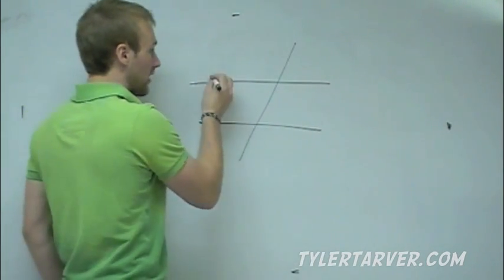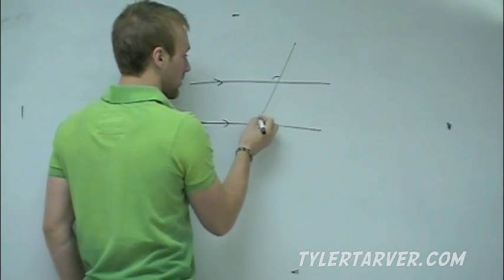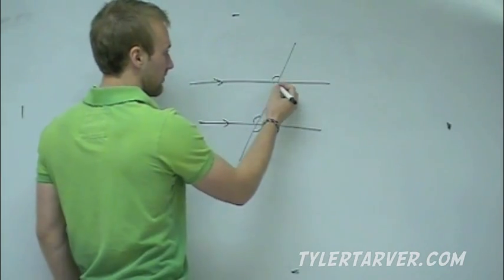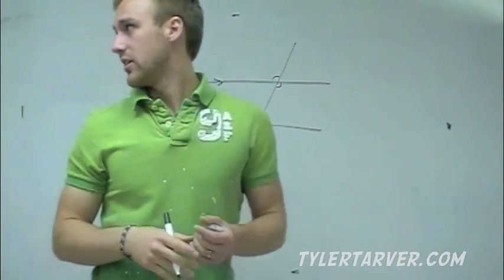Last time we said, if these two lines are parallel, well then this is equal to this, this is equal to this, this is equal to this, and then these are supplementary, and we learned all these things.